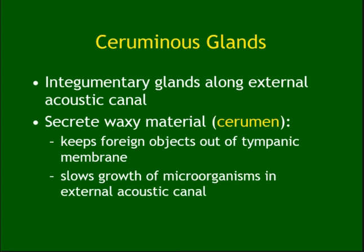Ceruminous glands — the name comes from what they secrete: cerumen, which is ear wax. Cerumen is there for a reason; it protects and stops things from entering and injuring the eardrum. The structure of cerumen itself also kills pathogens — that is why we have ceruminous glands.